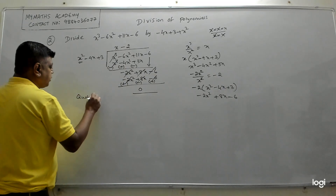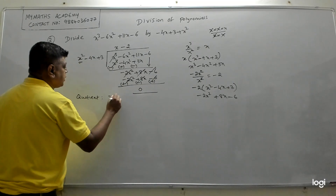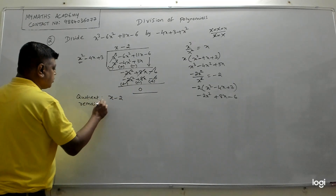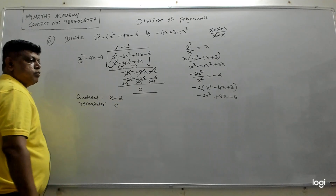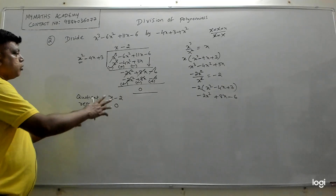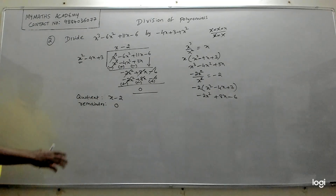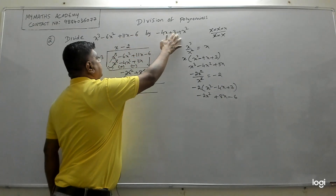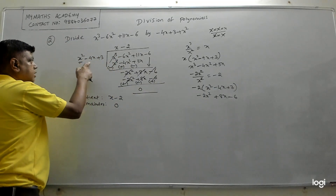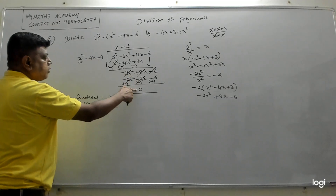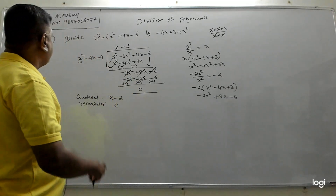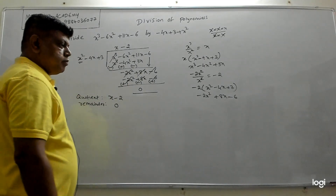The quotient is x − 2 and the remainder is 0. So this is the dividend, this is the divisor, this is the quotient, and this is the remainder.